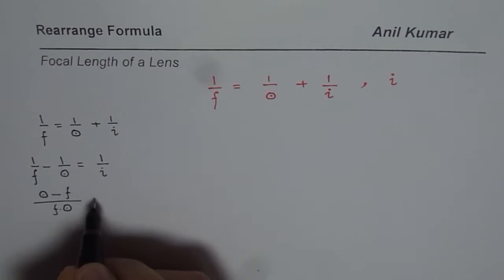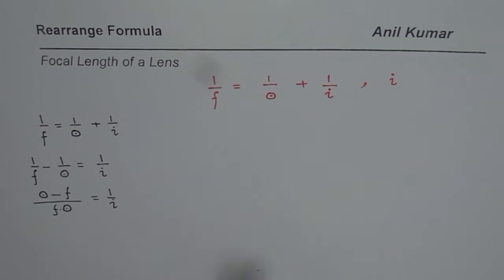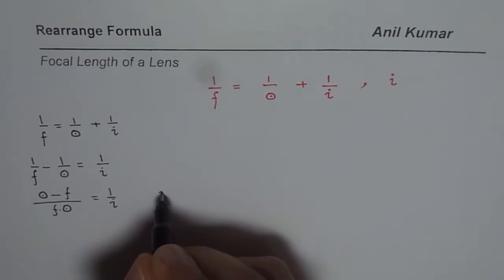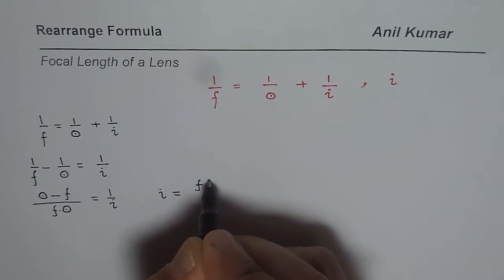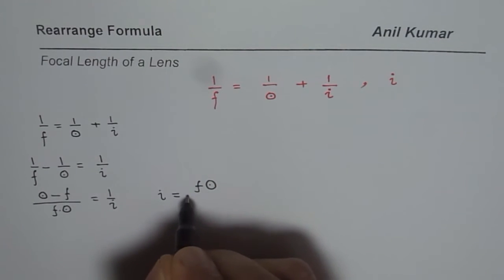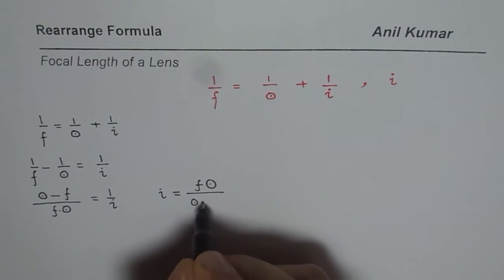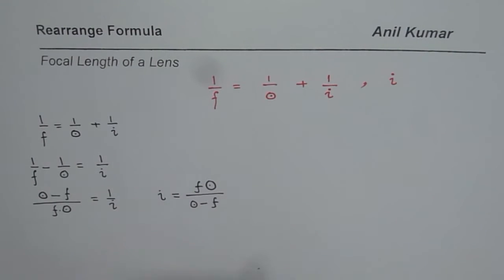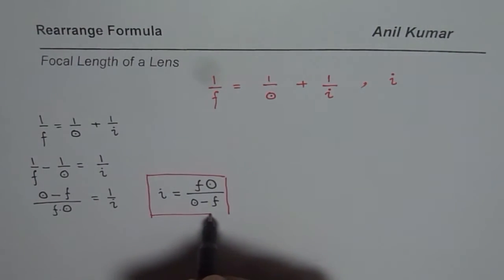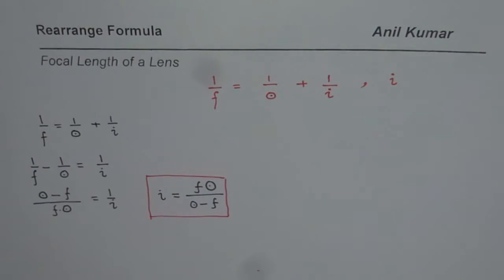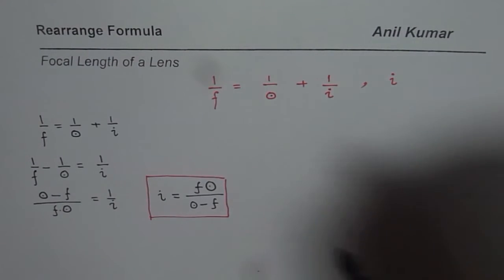We get (O minus f) over (f times O) equals 1 over I. Now we can flip and write I equals f times O divided by O minus f. That is how you can write this rearranged formula. This form for object distance O looks very interesting.